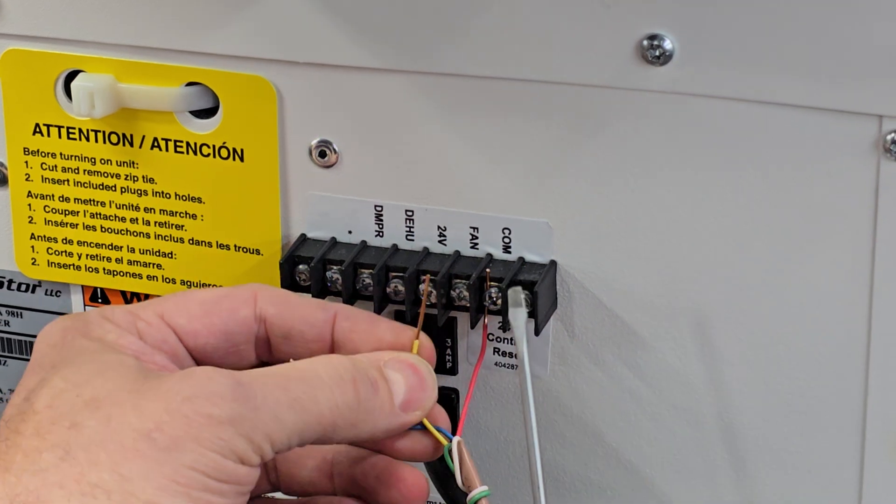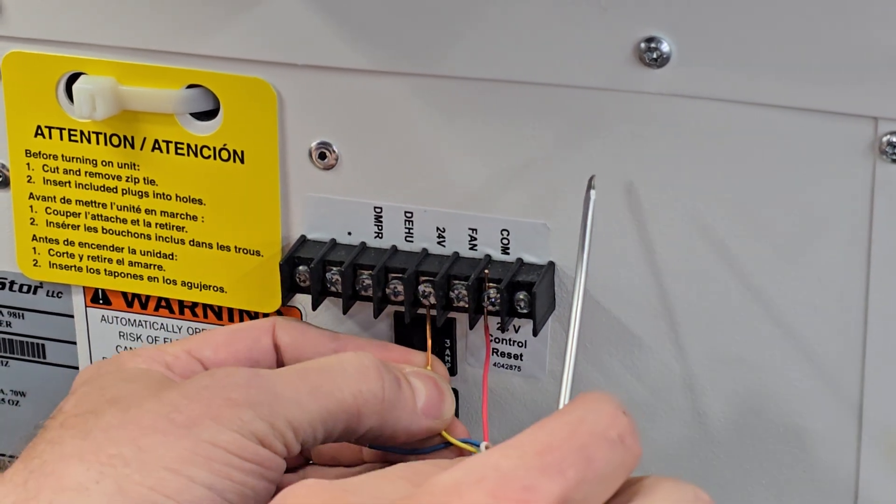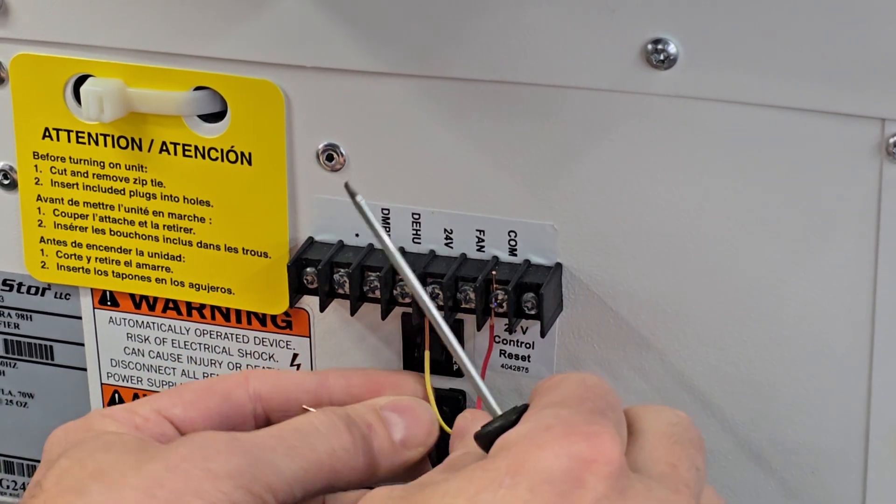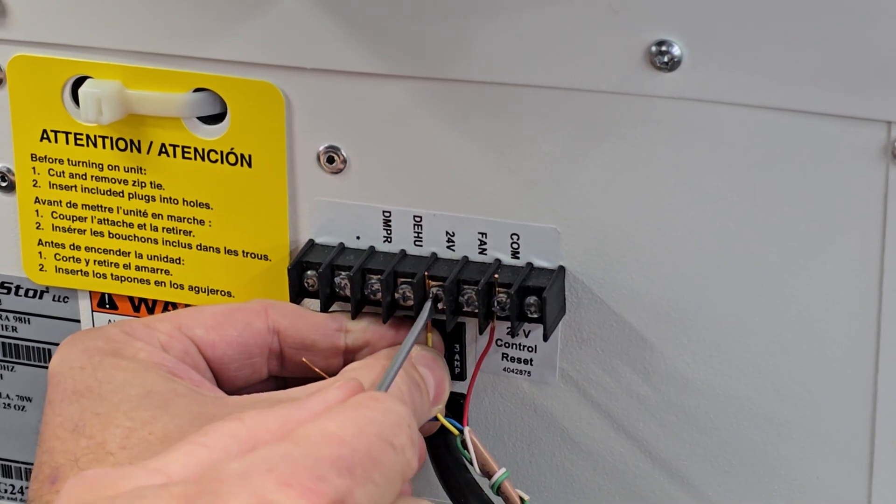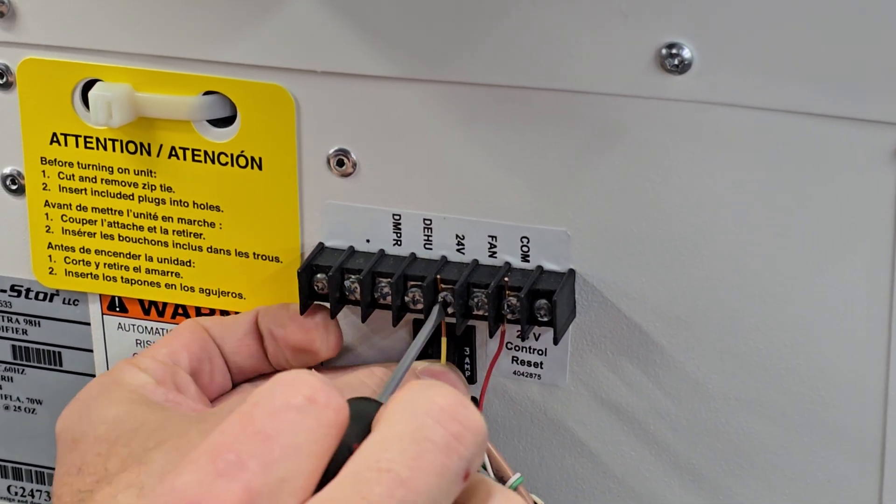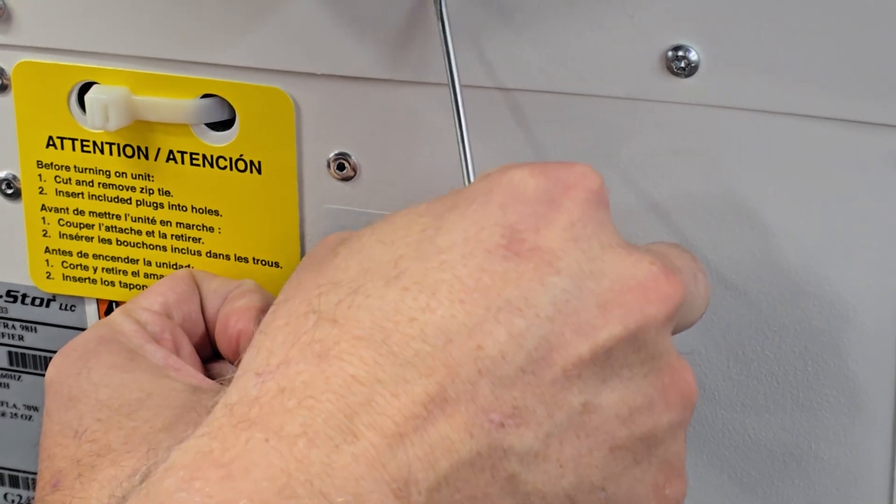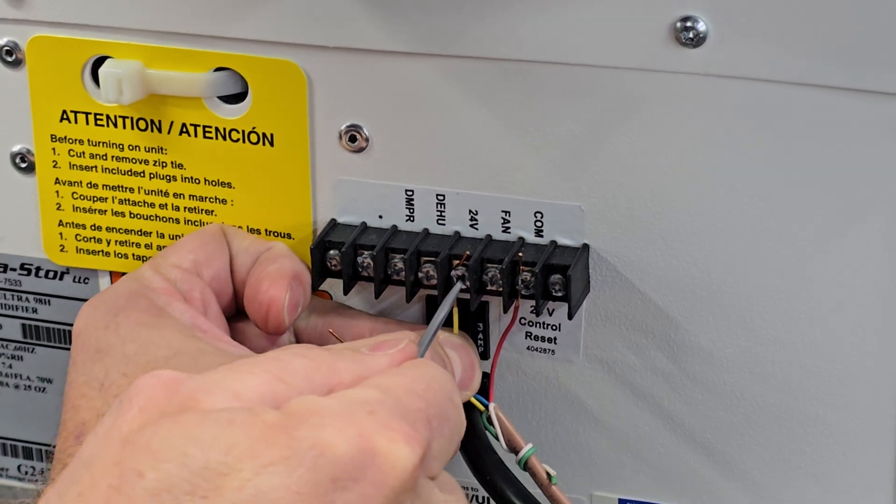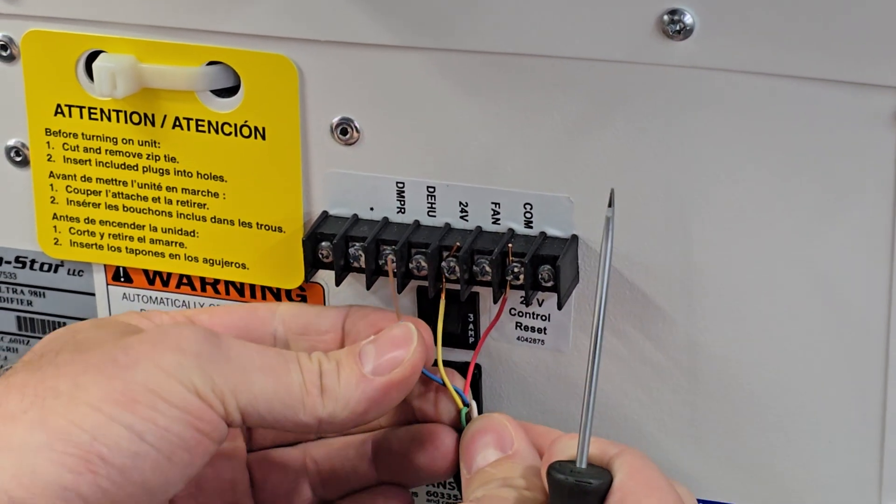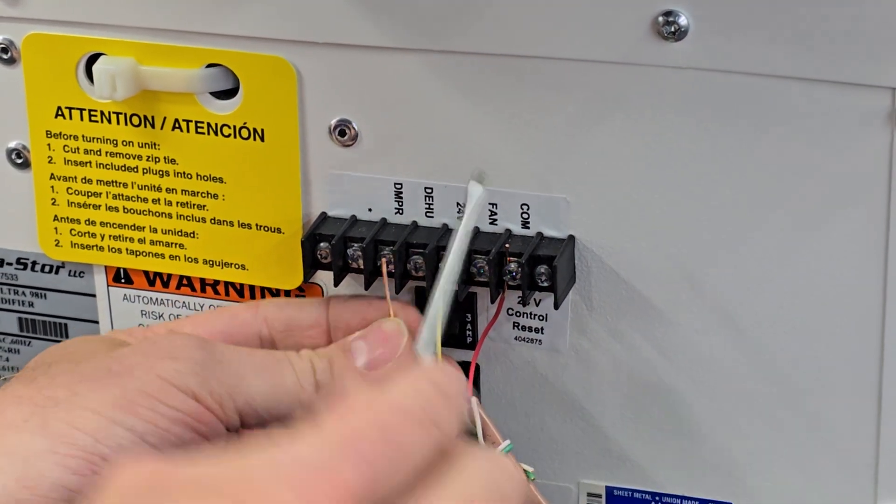The next will be the yellow wire on the 24V terminal. Same process as before. Sometimes bending it around the screw will help. And lastly the blue wire will go on the de-hue wire.